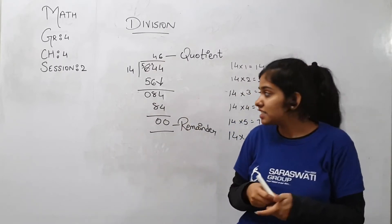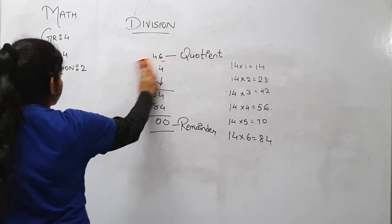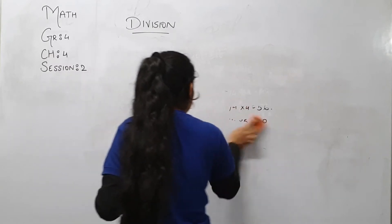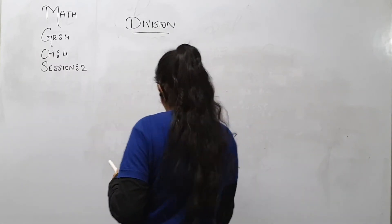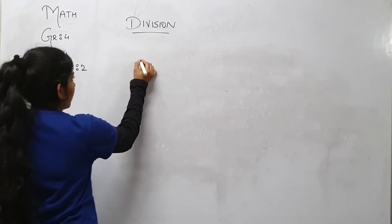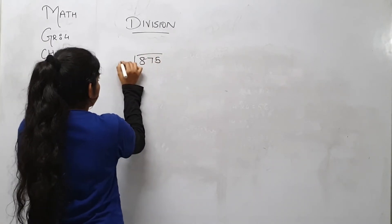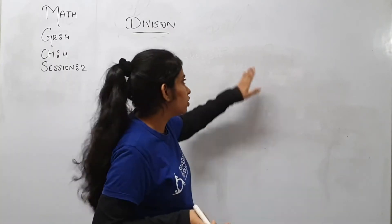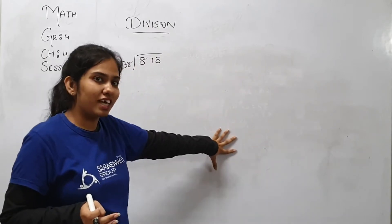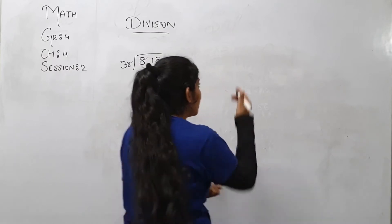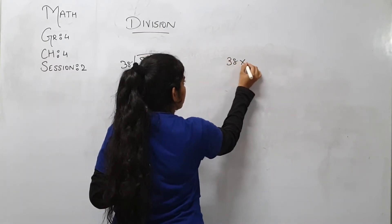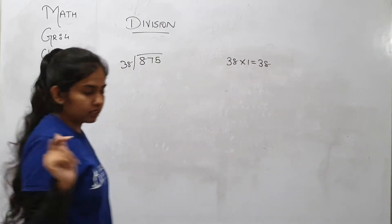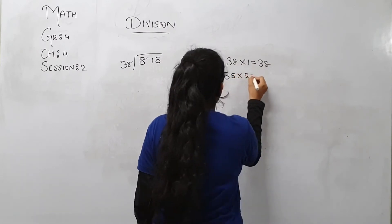Now let's take another example: 875 divided by 38. So students, over here we don't know the table of 38. So over here we will write, as part of rough work, we will take these two digits only first. Then 38 twos are 76.